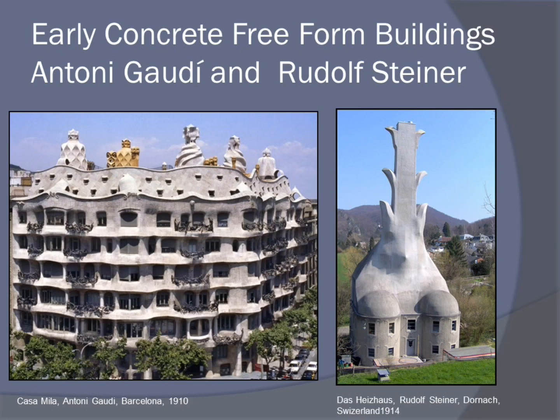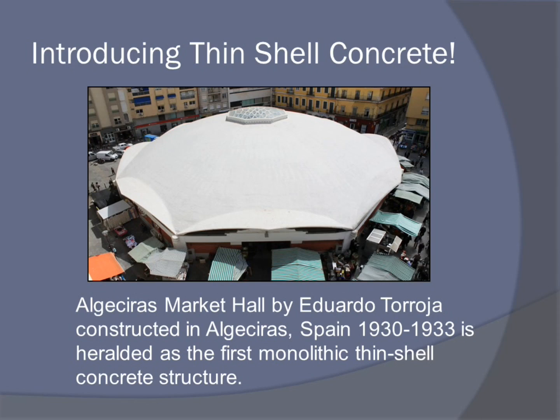Steiner was designing in Switzerland, and a good example of the early form-follows-function approach is a boiler building where the smokestack projects the smoke and fire form, and the base has two round boilers. In the early 1930s, the first thin shell monolithic building was constructed in Algeciras, Spain, and the freeform modern movement took off. These types of construction were popular as they were structurally efficient, carry loads perpendicular to their surface, and can bend to create and sustain equilibrium.